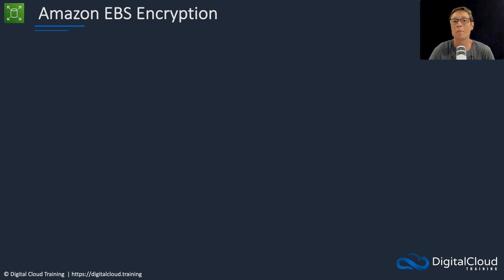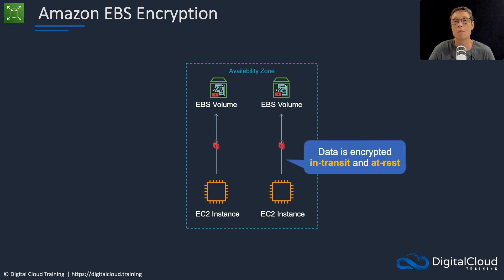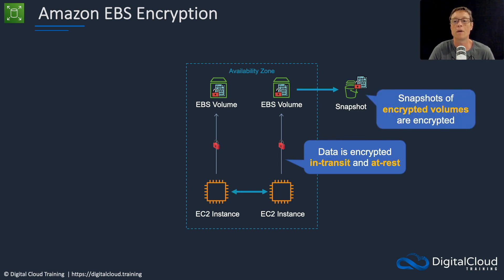Now let's move on to Amazon EBS encryption. EBS, the Elastic Block Store, provides volumes you attach to your EC2 instances, accessed over the network — in contrast to instance store volumes, which are local to the server hosting your EC2 instance. Both are block-based volumes. When you encrypt an EBS volume, the data is encrypted both in transit between your instance and the volume, and at rest on the EBS volume itself. If you create a snapshot from an encrypted EBS volume, the snapshot will also be encrypted.